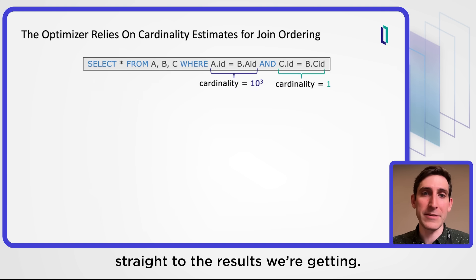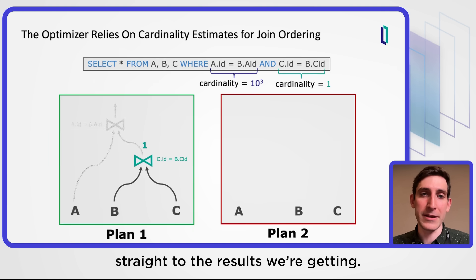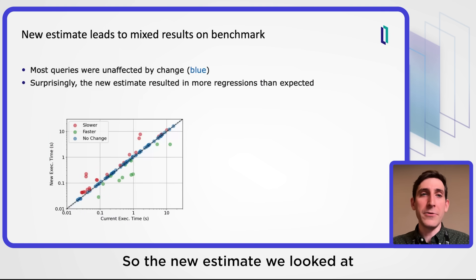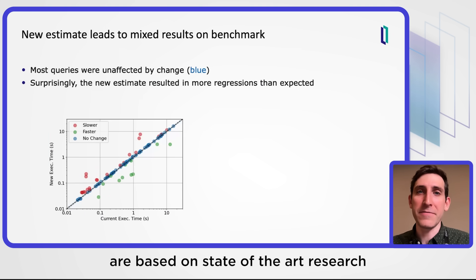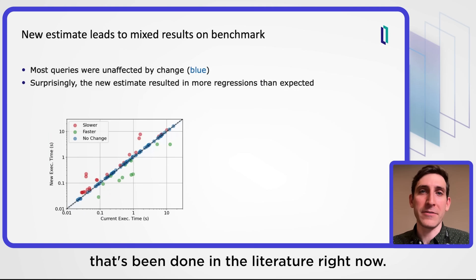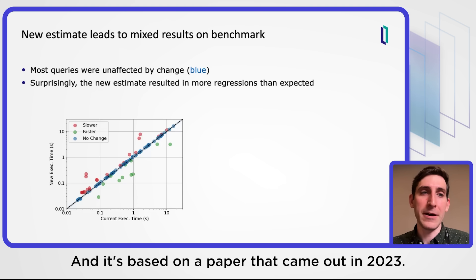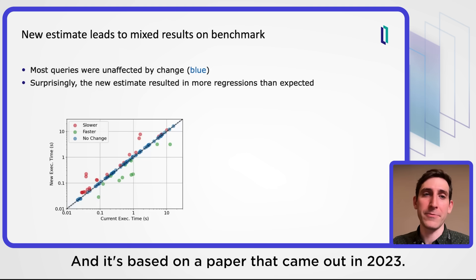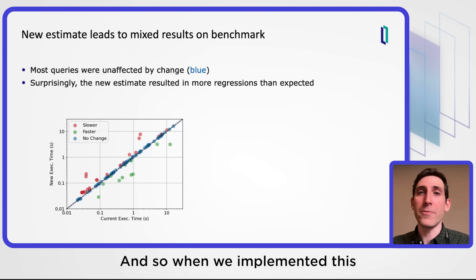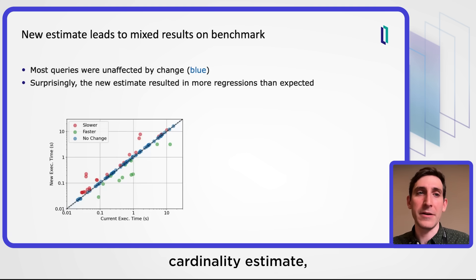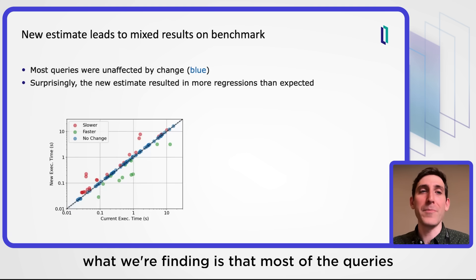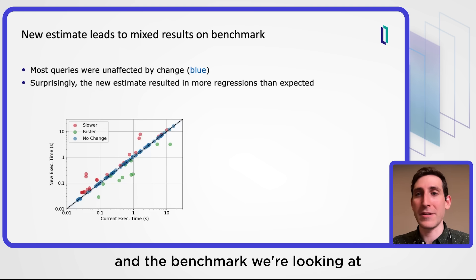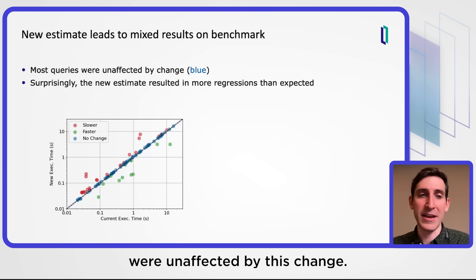I'm just going to jump straight to the results we're getting. The new estimates we looked at are based on state-of-the-art research being done in the literature right now, based on a paper that came out in 2023. When we implemented this cardinality estimate, what we're finding is that most of the queries in the benchmark we're looking at were unaffected by this change.